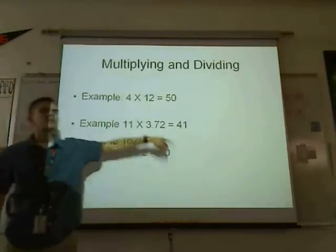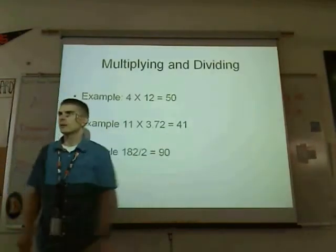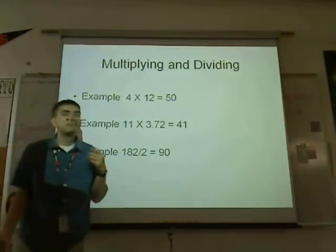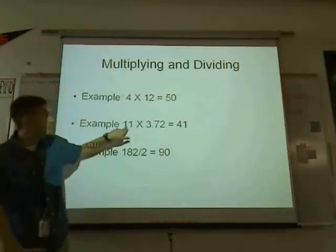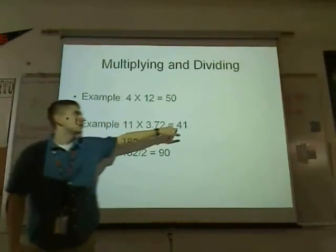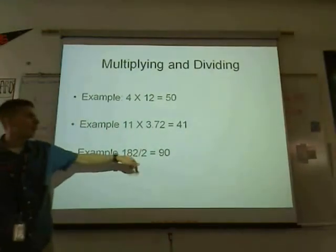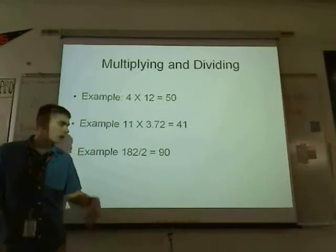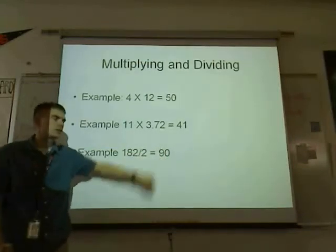11 times 2.71 does not equal exactly 41 — it probably equals 40.79 or something like that — but you only get 2 sig figs: 2 here, 3 here, so your smallest number is 2, and you round to 2 significant figures. Again, 182 divided by 2 is 91, but you only get 1 digit, so you round to the first digit.